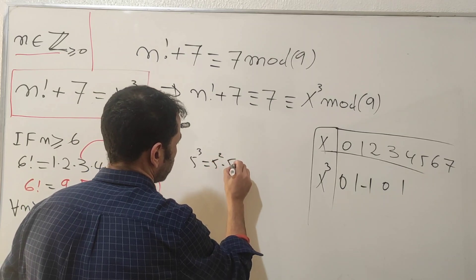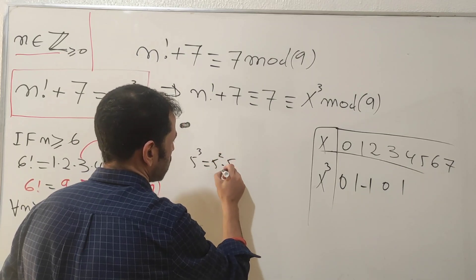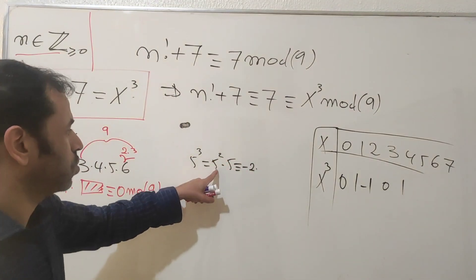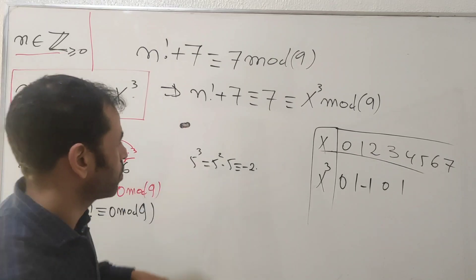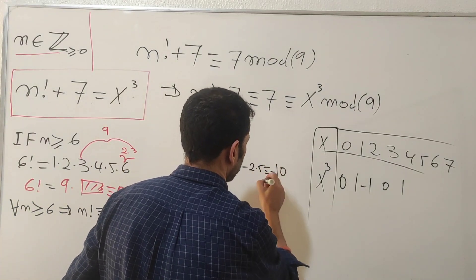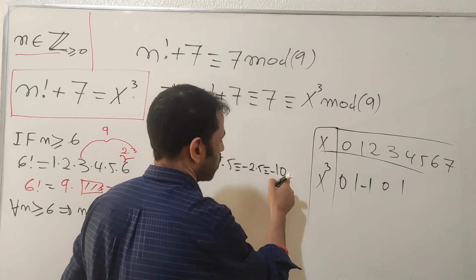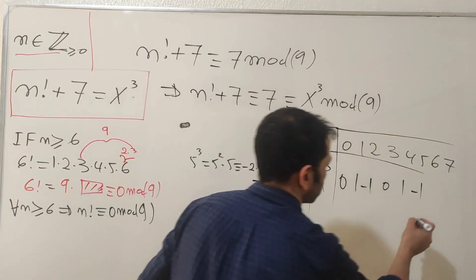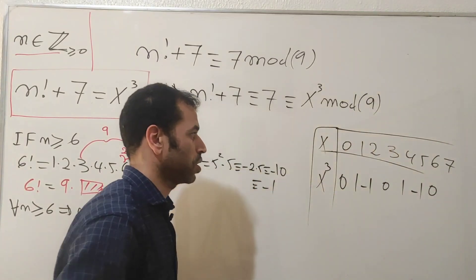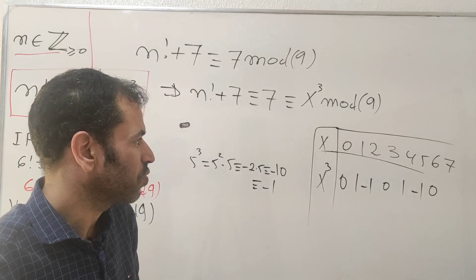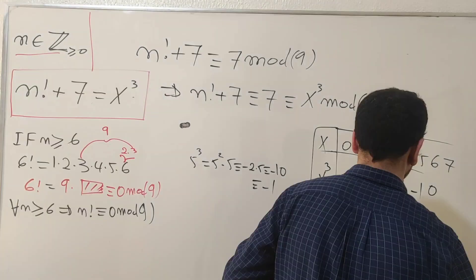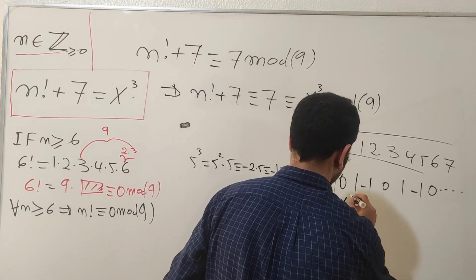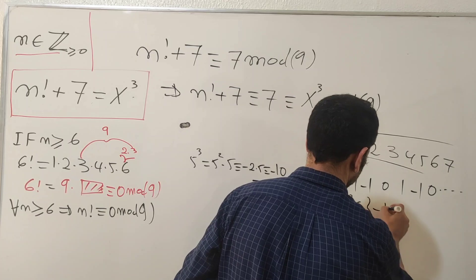For x = 5: five cubed is 125. Five squared is 25, which is congruent to minus two mod nine (since 25 is two less than 27). Multiplying by five gives minus ten, and extracting nine gives minus one. For x = 6: six cubed is clearly zero mod nine. We can stop here — x cubed mod nine belongs to the set {minus one, zero, one}.